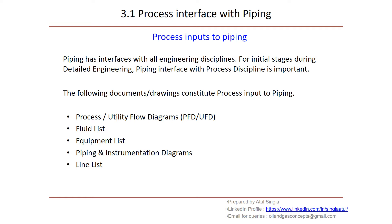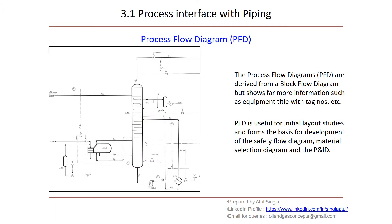fluid list, equipment list, instrument diagram P&IDs, and line list. Let us start with BFDs. The process flow diagram is derived from a block flow diagram but shows far more information such as equipment title with tag numbers. If you see the left figure, equipment numbers are there, flow direction is there, tag numbers are there. This is basic information. The first input available to piping from process BFD is useful for initial layout studies and forms a basis for development of safety flow diagram, material section diagram, and P&IDs.